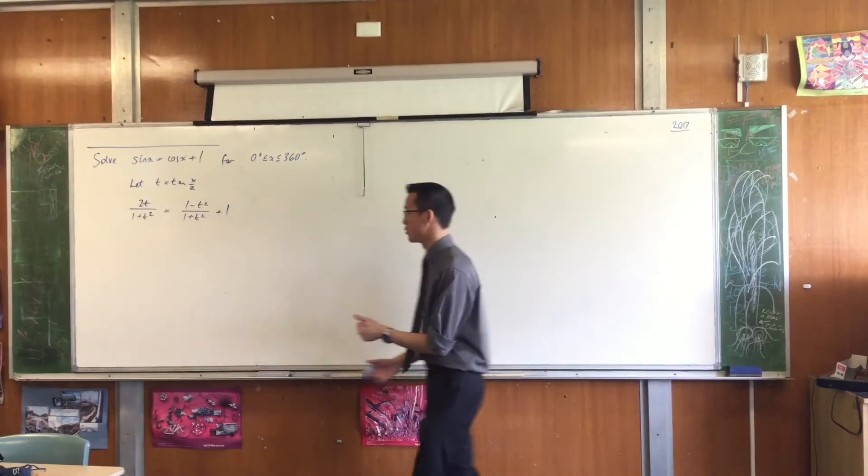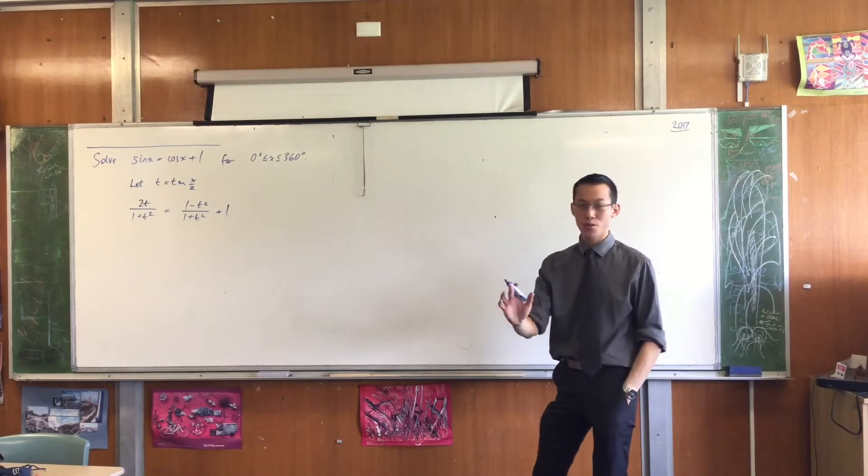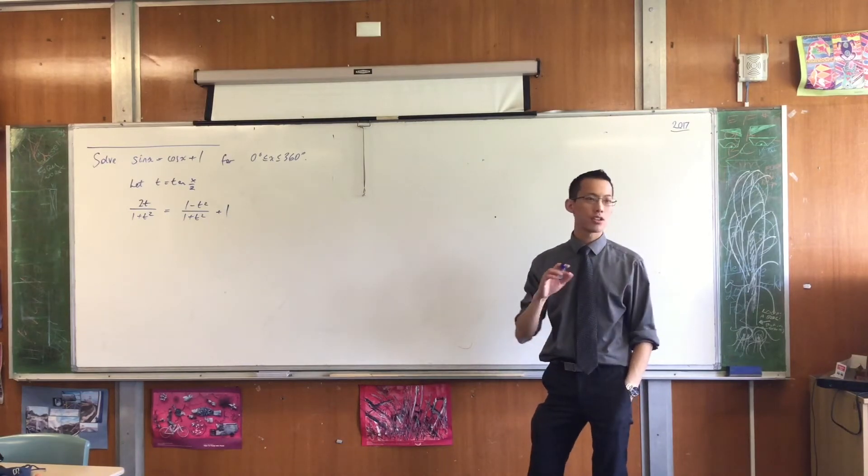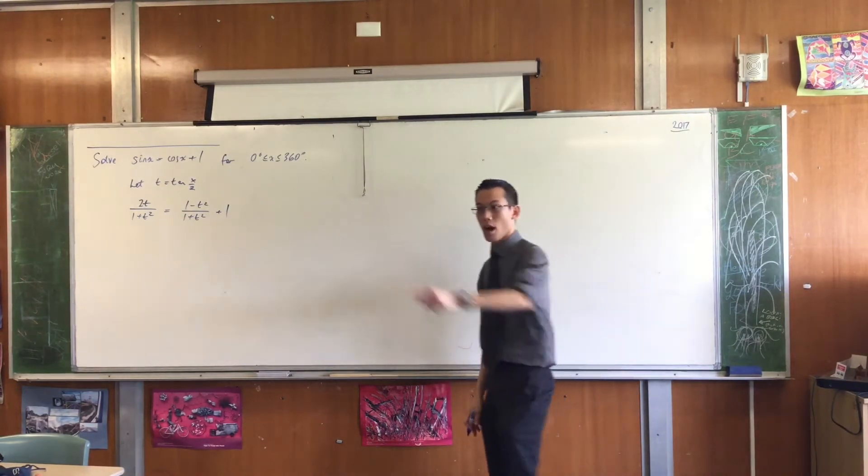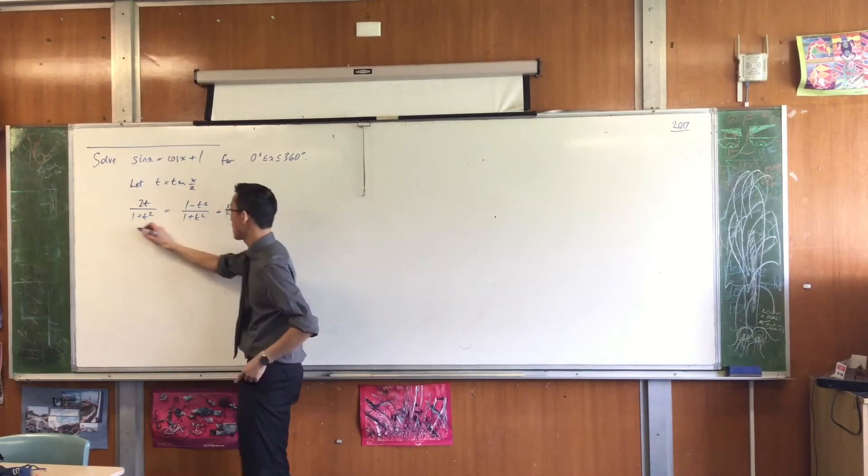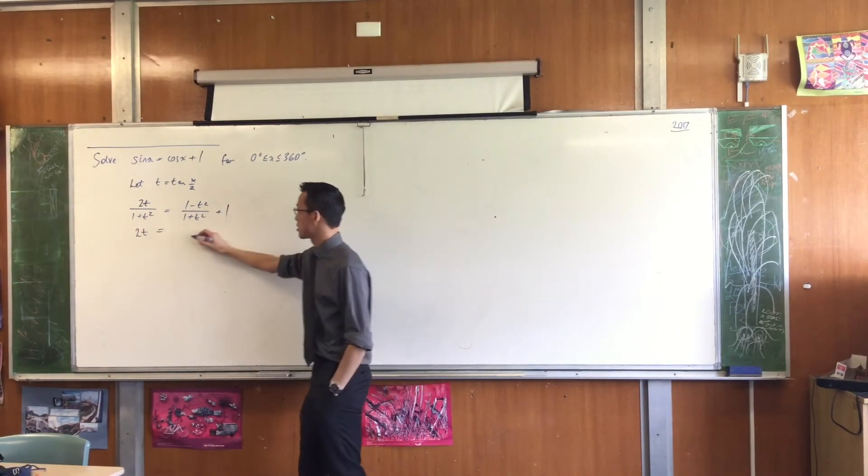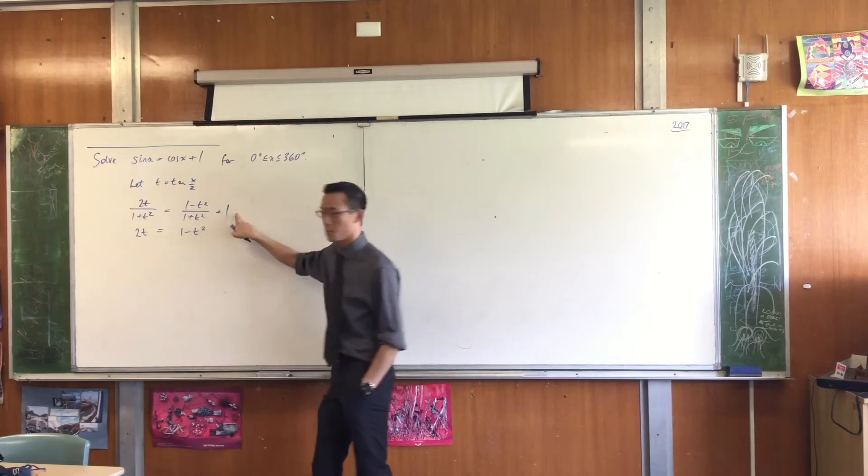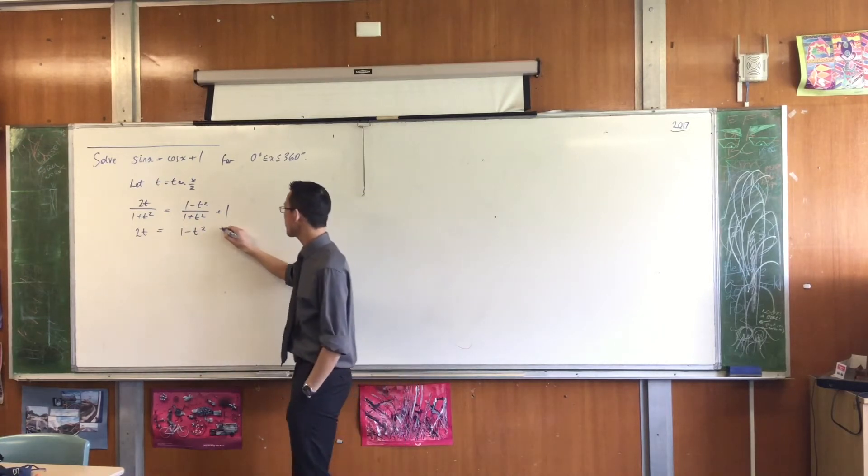Looking good. Okay, I've translated from trig into algebra, so now I just need to solve this thing. I'm going to multiply through, as we've seen a few times today already. That will become 2t. This is going to become 1 minus t squared. This becomes 1 plus t squared.